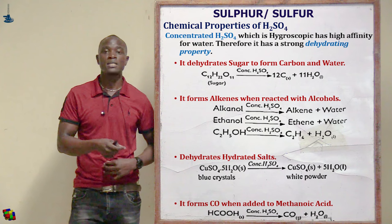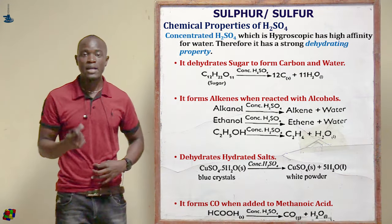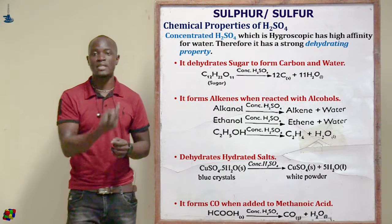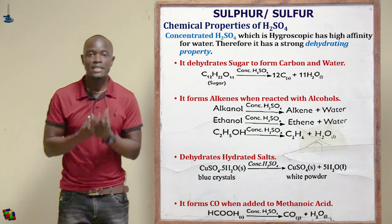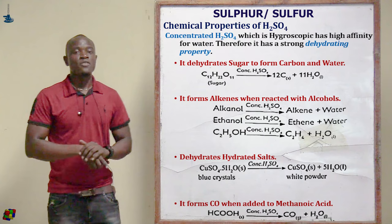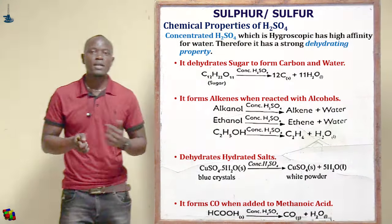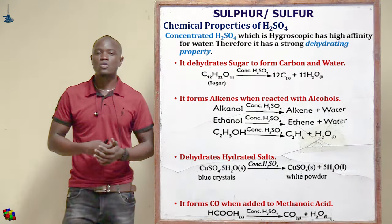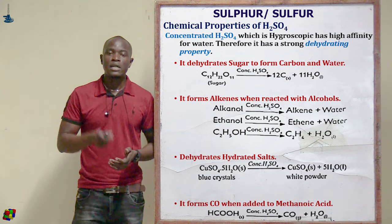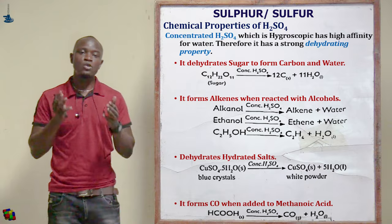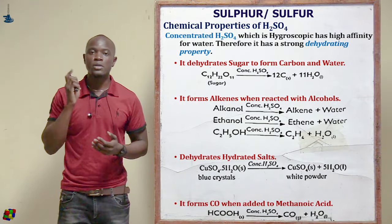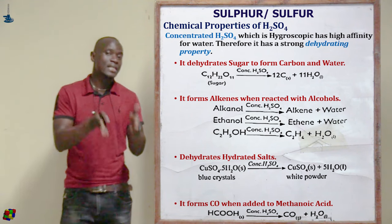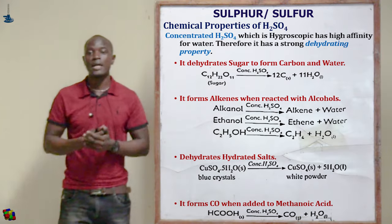Due to its high affinity for water, concentrated sulfuric acid is used as a drying agent for laboratory preparation of gases. It can be used to dry oxygen, hydrogen, nitrogen, and sulfur dioxide. However, it should never be used to dry ammonia gas because it will react with ammonia to form ammonium sulfate. In the Haber process, anhydrous calcium chloride is used to dry ammonia gas instead.